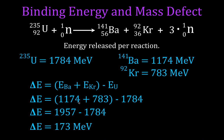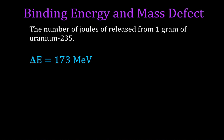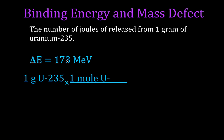Now we need to convert that to joules released from one gram of uranium-235. The main challenge here is unit conversion. We start with one gram of uranium-235 and use the molar mass: one mole of uranium-235 has a mass of 235 grams, which gives us 4.26×10⁻³ moles.